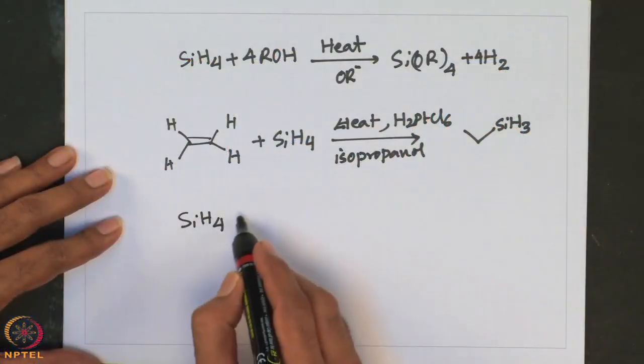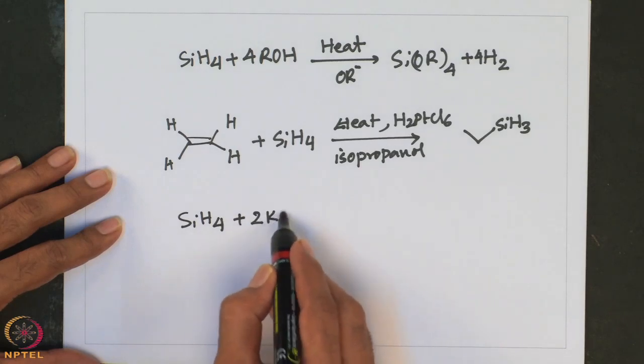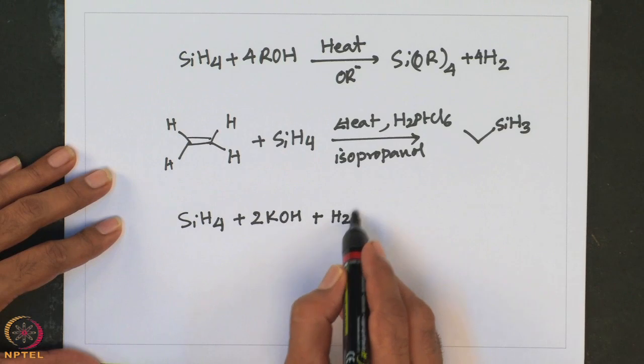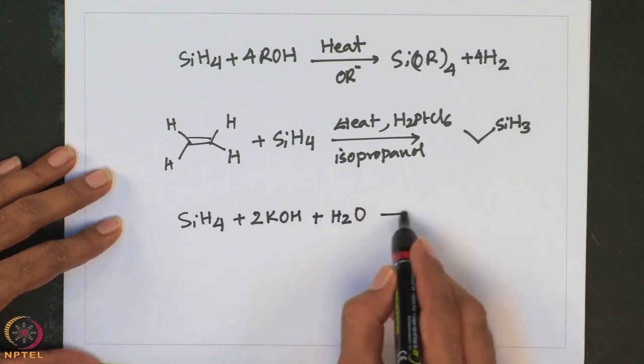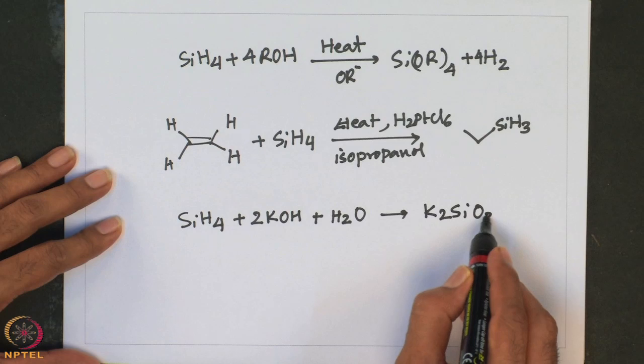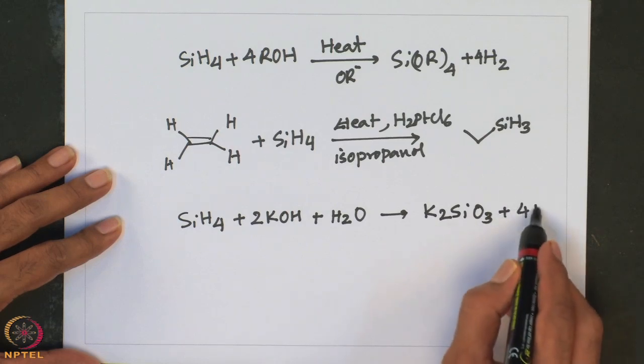Silane is a colorless gas which is insoluble in water. It can rapidly react with alkalis and form compounds of this type. For example, when treated with KOH and H2O, it gives K2SiO3 plus 4H2.